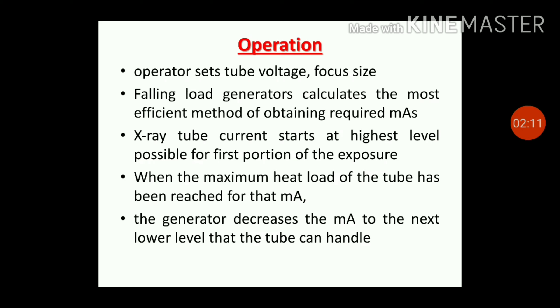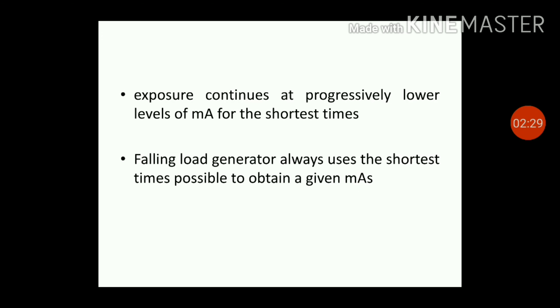X-ray tube current starts at the highest possible level for the first portion of the exposure. When the maximum heat load of the tube has been reached for that mA, the generator decreases the mA to the next lower level that the tube can handle. Exposure continues at progressively lower levels of mA for the shortest time possible until the desired mAs is reached. Falling load generators always use the shortest time possible to obtain a given mAs.